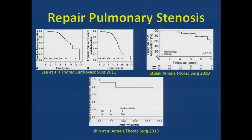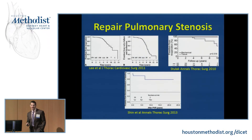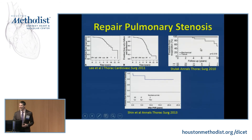If surgical valve placement is needed, tissue valves in the pulmonary position have about a half-life of ten years. However, unlike in the tricuspid valve position, mechanical valves may actually demonstrate increased durability in the pulmonary position — though they are rarely placed there. Some published data suggests that the durability of a mechanical pulmonary valve replacement is superior to that of a tissue pulmonary valve replacement, with a seemingly favorable complication profile despite requiring anticoagulation.